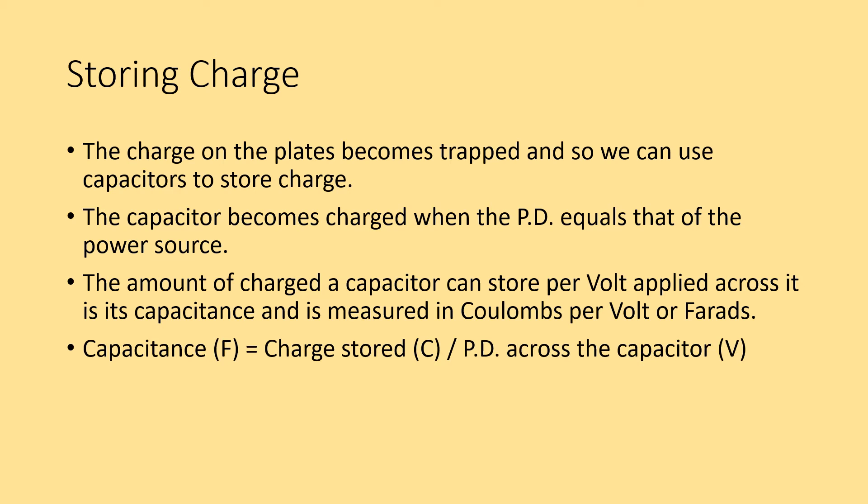The amount of charge a capacitor can store per volt, so the amount of charge per volt applied across it is its capacitance. It's measured in coulombs per volt. The SI unit for coulombs per volt is farads. Capacitance is how much charge we can get onto the capacitor per unit volt of potential difference across it. We know that as soon as the potential across the plate is equal to the potential from the power supply, you cannot get any more charge on it. This means we can have a little equation. Capacitance measured in farads is equal to the charge stored measured in coulombs divided by the potential difference across the capacitor in volts. Or C equals Q over V.